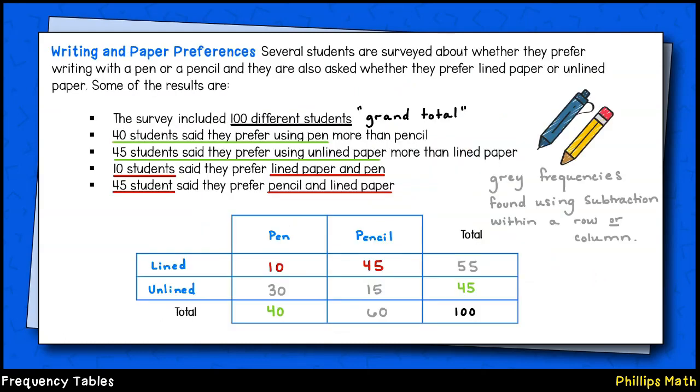Let's look at another example and fill in some of those frequencies. We are given a survey that includes 100 different students. So this grand total will be found in the bottom right of our table. We are told 40 students prefer pen compared to pencil. That's a marginal frequency which will be found at the bottom of the column marked pen.